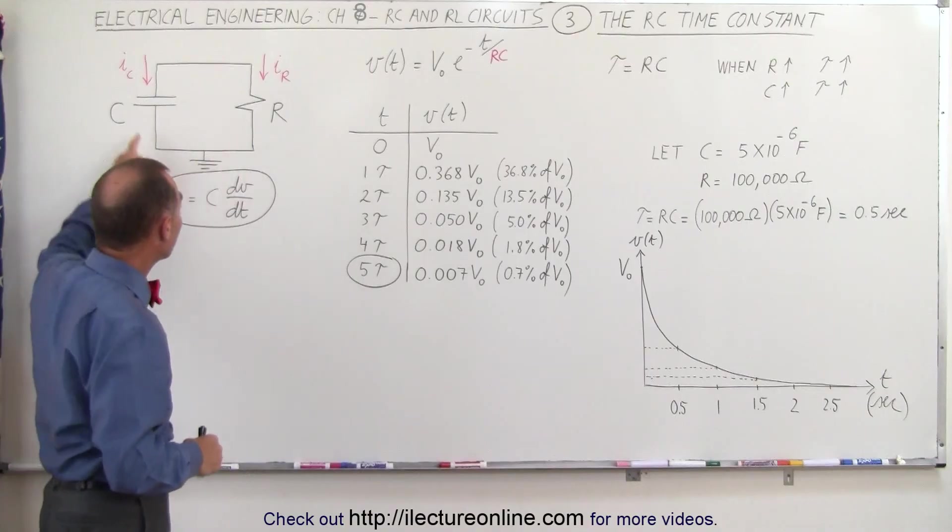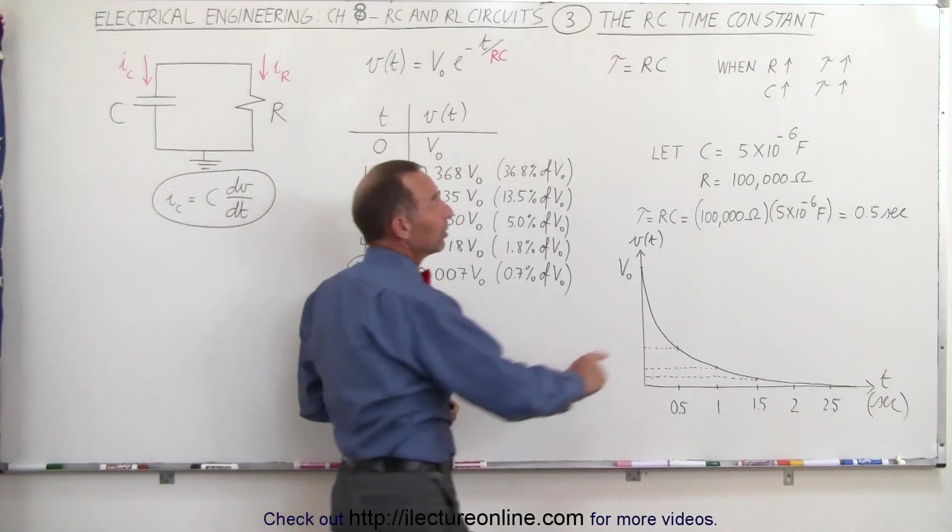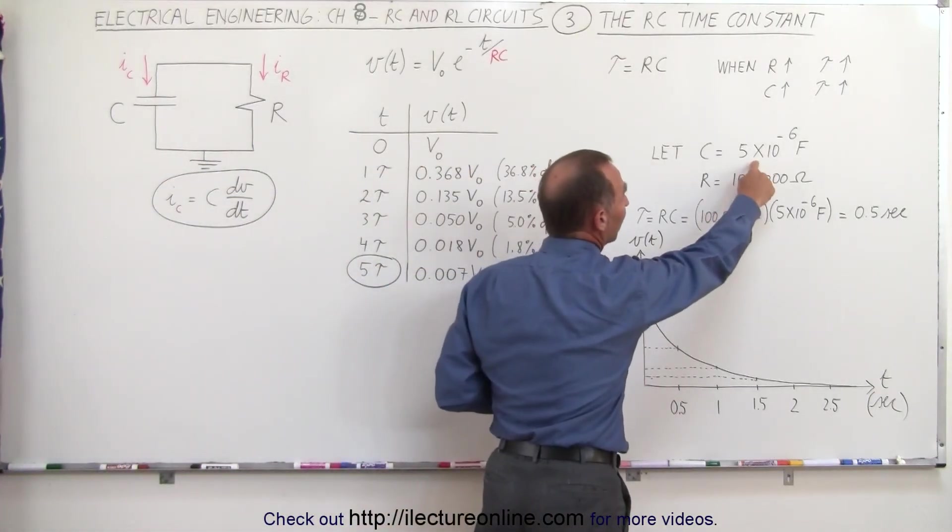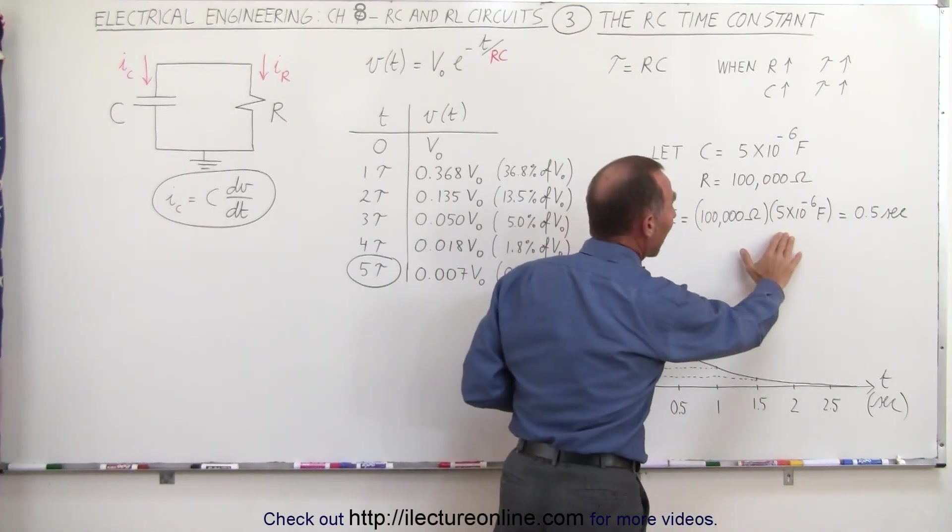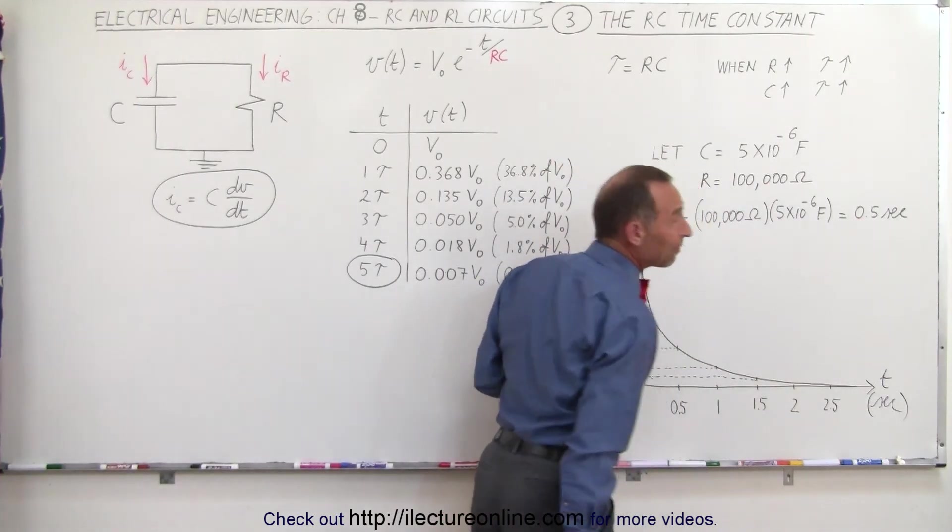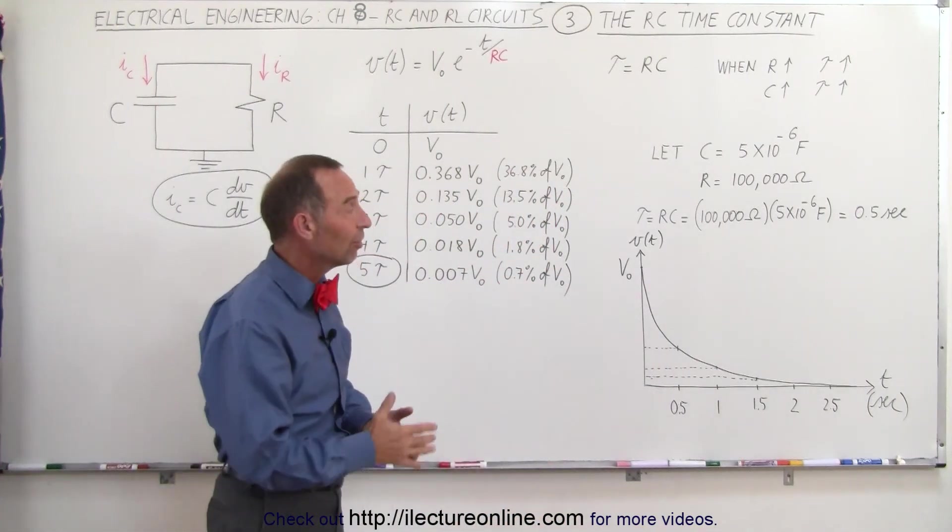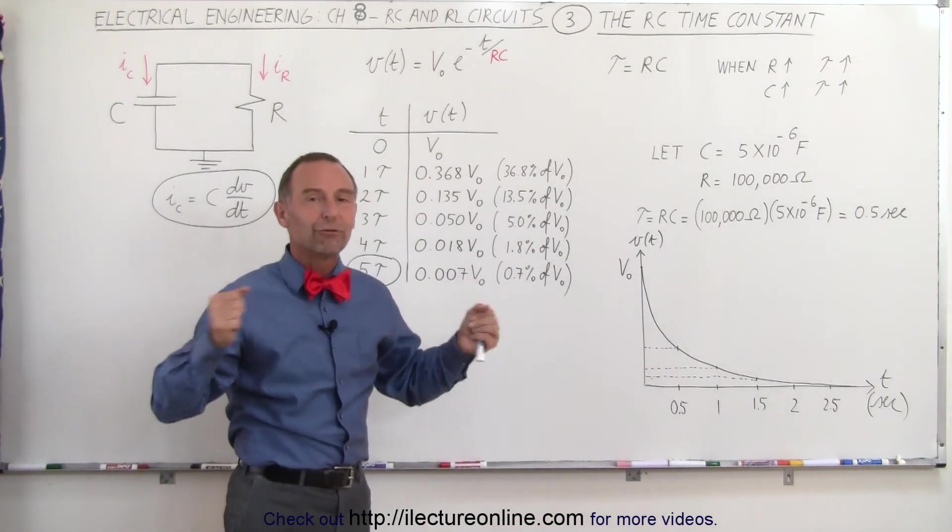So in this case, in this particular circuit, if the capacitor was 5 microfarads, and the resistance was 100,000 ohms, it would take five time constants, or five times a half second, which is two and a half seconds, for the capacitor to fully discharge.